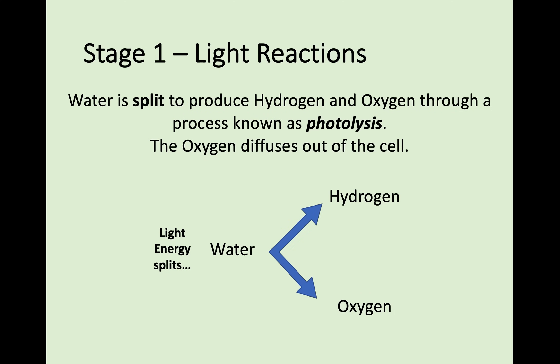One thing to remember is that although this hydrogen is going to be used and is really important for stage 2, the oxygen is actually not required by the plant — we would call it a byproduct or a waste product. So the plant just diffuses the oxygen out of the cell, it goes into the atmosphere, and that's the oxygen that we breathe. So if plants decided they wanted to use this oxygen, we'd be in a lot of trouble — this is where we get our oxygen from.